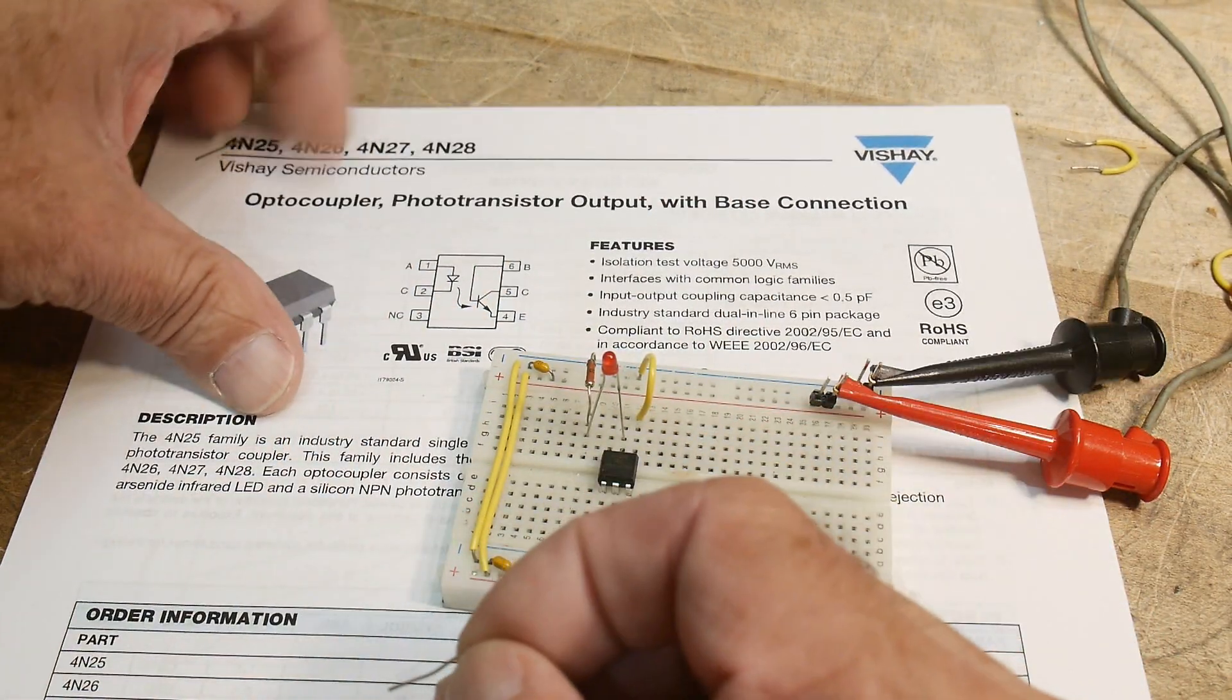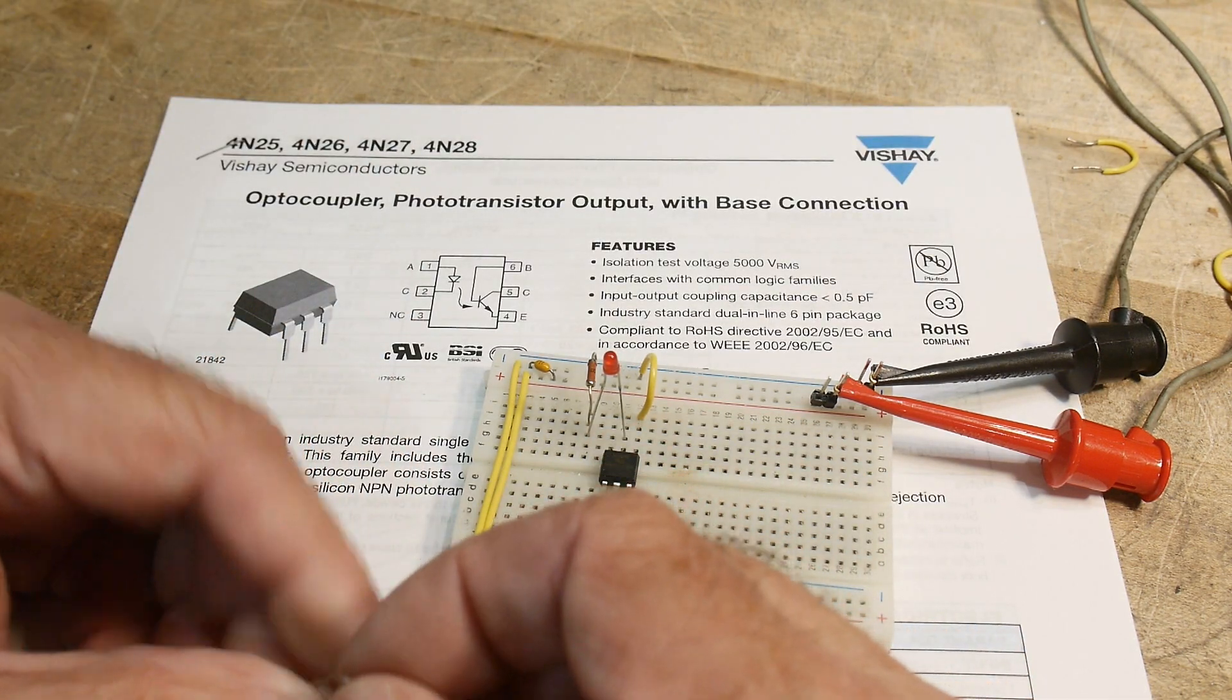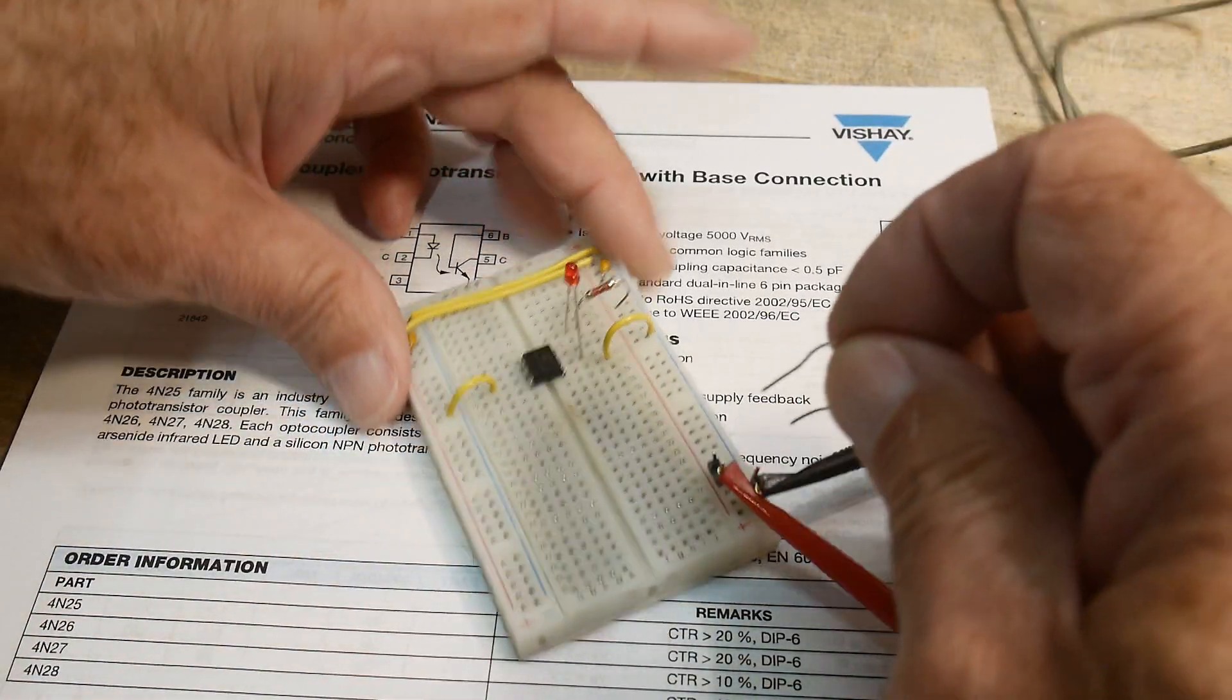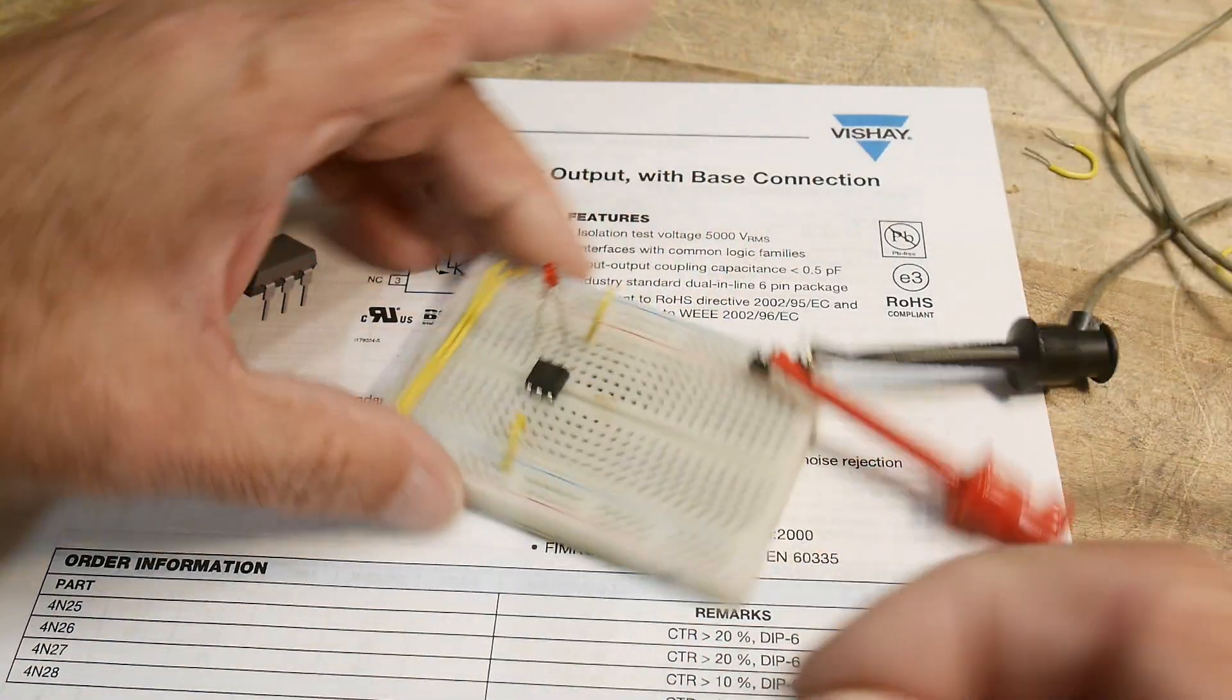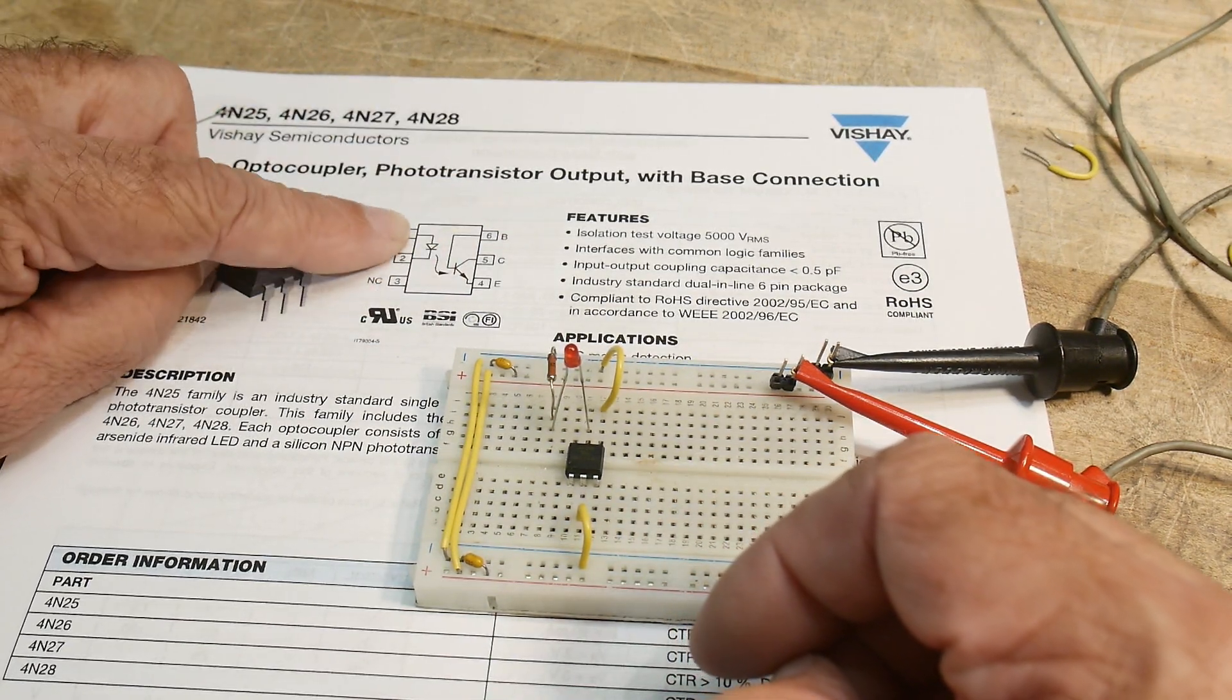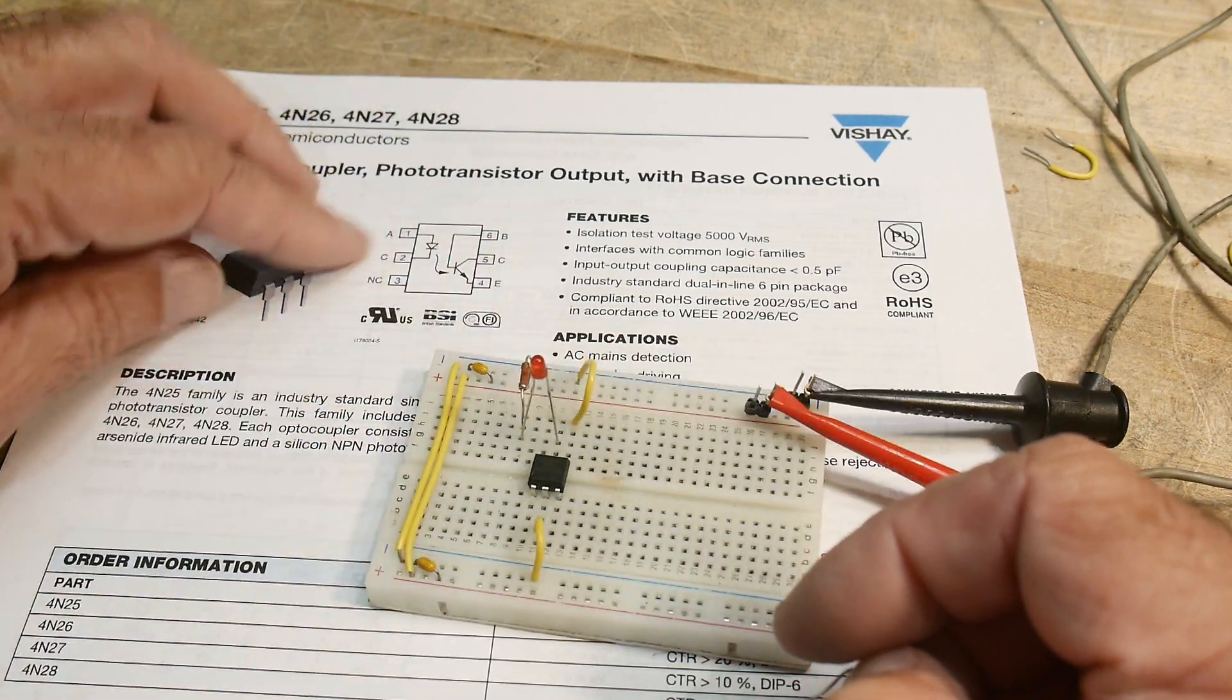But the cool thing about this is we have pin 6, okay? So what if we take our resistor and put it on pin 6 and tie it high? And guess what? The LED also comes on. So we can control it directly with the base, or we can control it indirectly with the LED. So that's pretty neat.